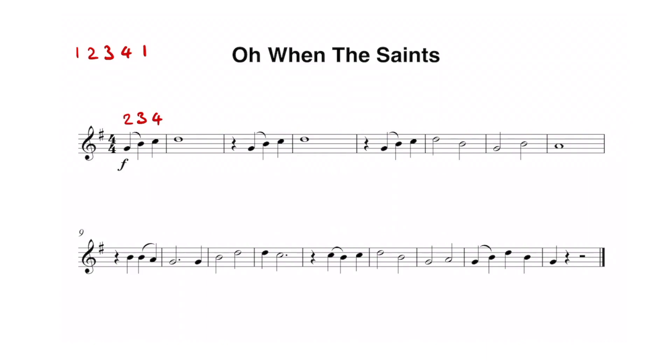On line number two we again start with a pickup. Rest and breathe on beat number one before playing the B on beat number two. This note here is a dotted minim which is three beats long. A quick reminder: the dot is half the value of the note it is next to. As this dot is next to a two beat minim it has the value of a one beat crotchet. Two plus one equals three.